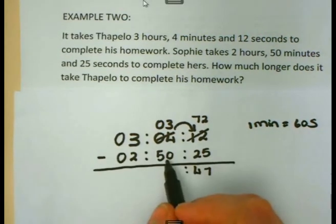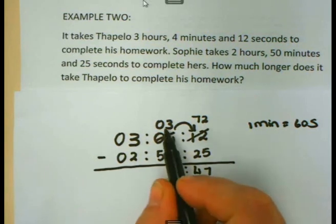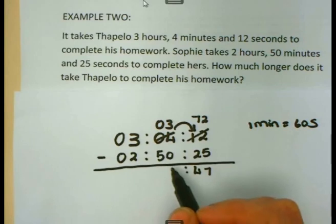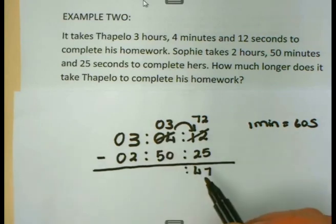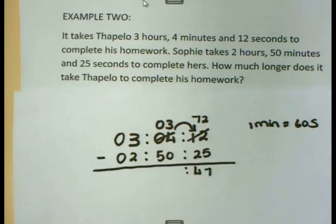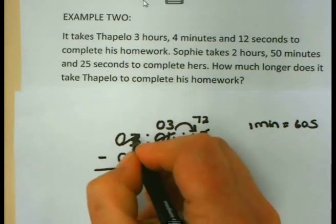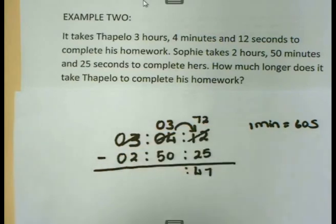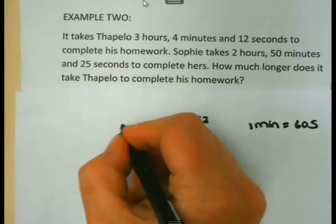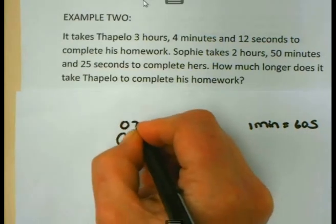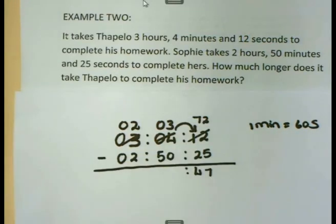If I now want to subtract my minutes, I am again facing a problem. Since 3 is smaller than 50, I cannot subtract the 50 from the 3. So once again, I am going to borrow. But when I borrow, I am going to borrow from the hours. So when I borrow from the hours 1 hour, I am going to take 1 of the hours, and here it will become only 2.